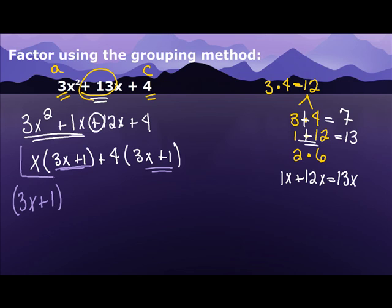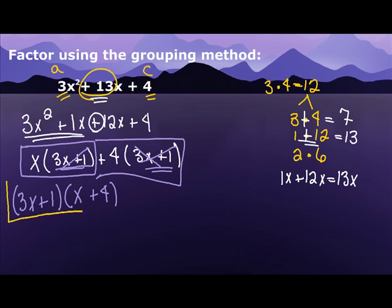Now when I look at the first part, when I take 3x plus 1 out, I'm left with an x. When I look at the second part, when I take 3x plus 1 out, I'm left with my 4. And it just so happens that this is 3x squared plus 12x plus 4 factored. So this is my answer.